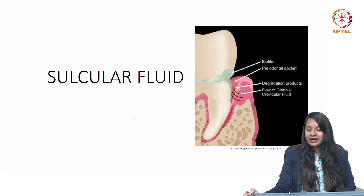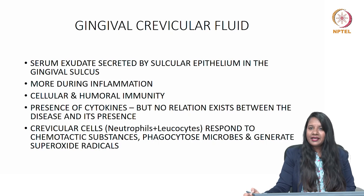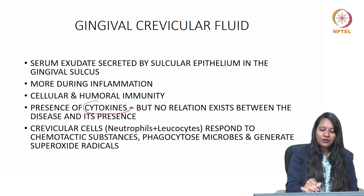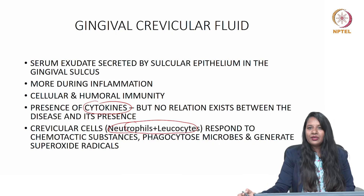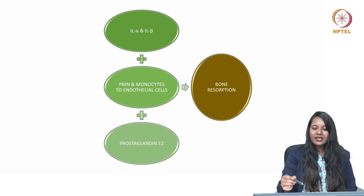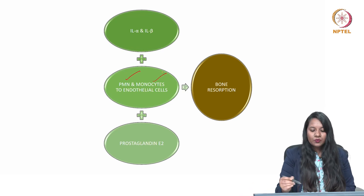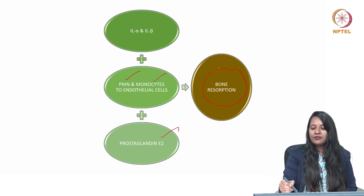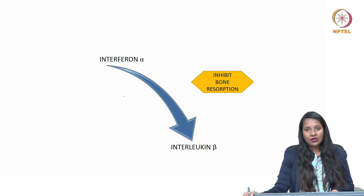Moving to sulcular fluid or gingival crevicular fluid: it is a serum exudate secreted by the sulcular epithelium in the gingival sulcus. Its concentration increases during inflammation. It can adopt cellular or humoral immunity to move pathogens out, with cytokines present during inflammation. Crevicular cells — neutrophils and leukocytes — respond to chemotactic substances, phagocytose microbes, and generate superoxide radicals. Interleukin-1α and interleukin-1β enhance attachment of polymorphonuclear neutrophils and monocytes to endothelial cells, producing prostaglandins responsible for bone resorption. However, interferon-α downregulates interleukin-1β and inhibits bone resorption in periodontitis.